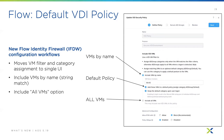In your updated VDI security policy in Flow, you have the VMs by name radio button and default policies. You can search for a VM by name, add VMs to the default policy, and also use a radio button to include all VMs in the policy.